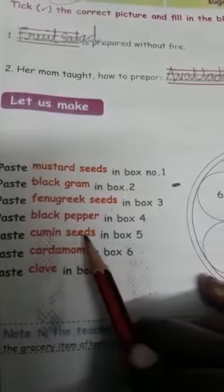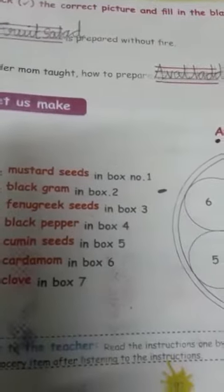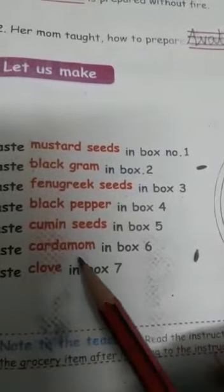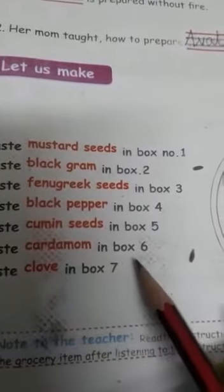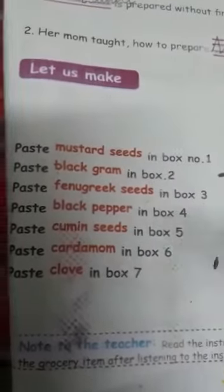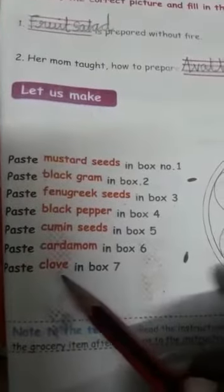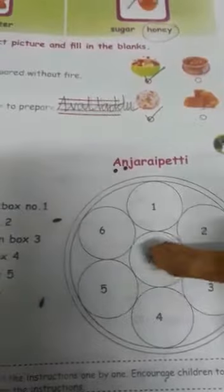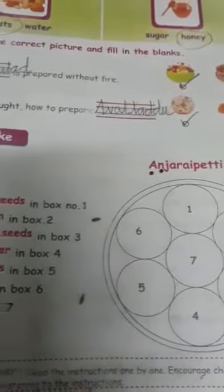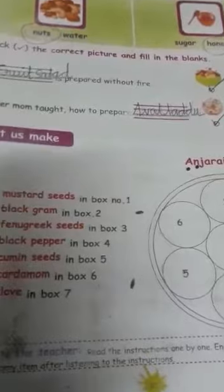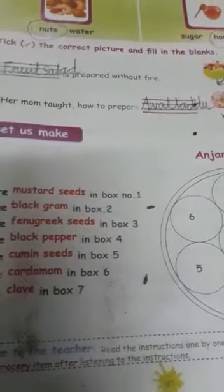Next, 5th one, cumin seeds. Cumin seeds means sirahan. Next, cardamom. Cardamom means Yelekai. Here, paste it. Next, 7th one, clove. Clove means pattai. 7th one. Here, paste it. Okay, you paste it. After, send it. Next, turn the page.